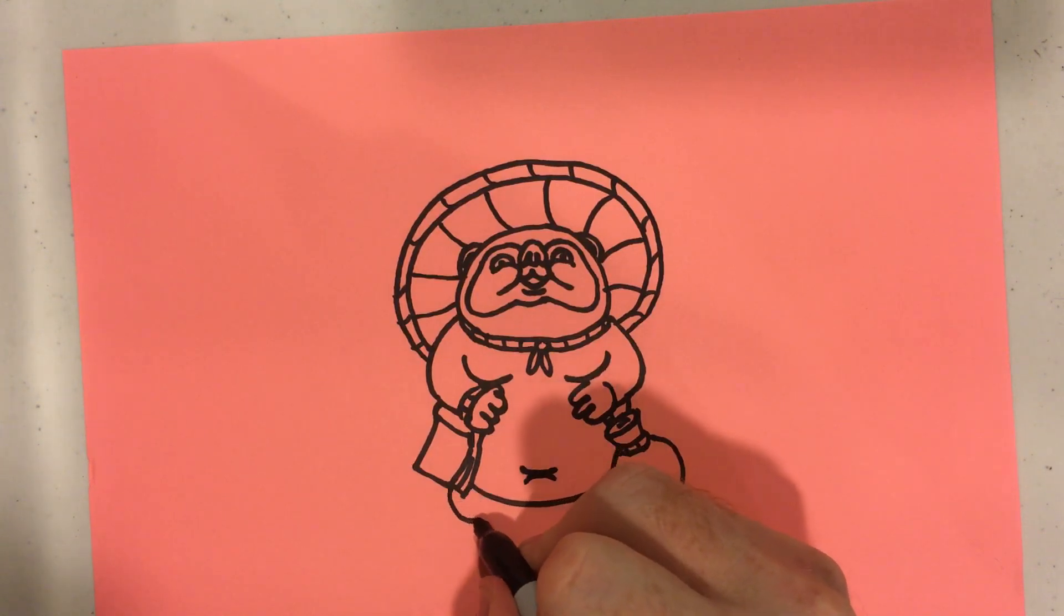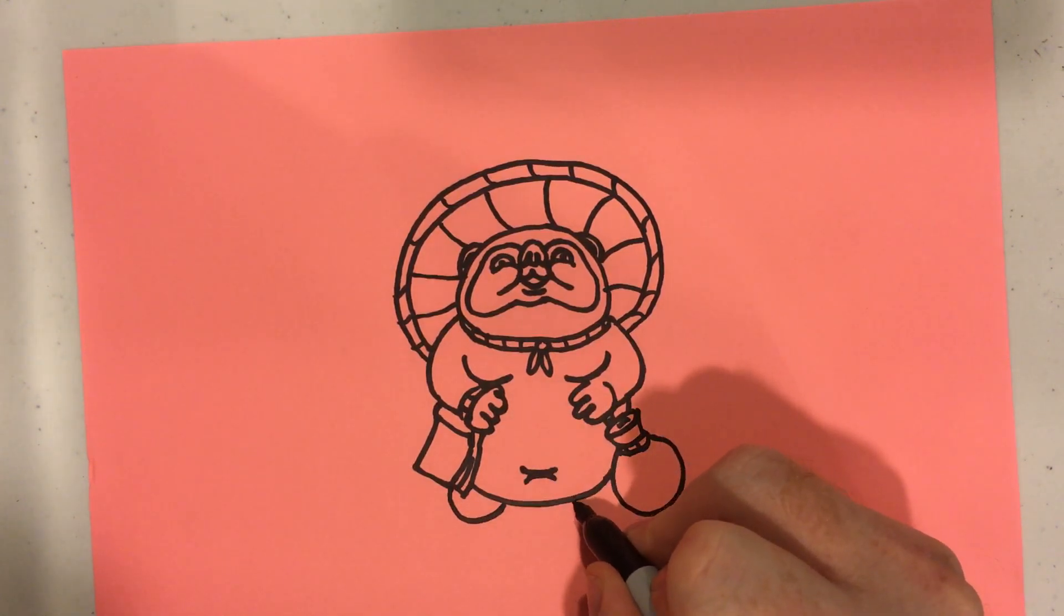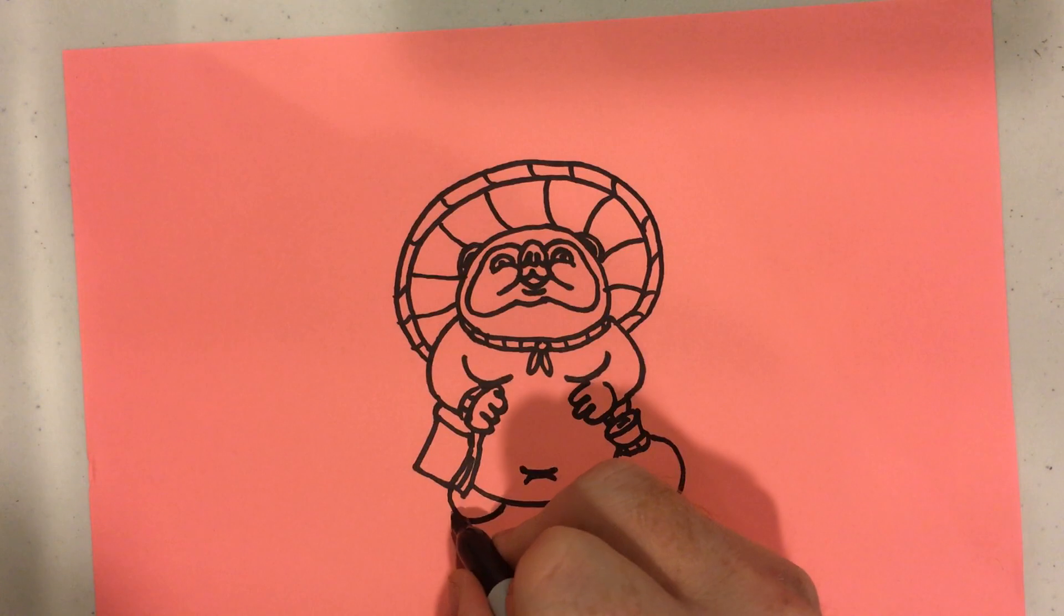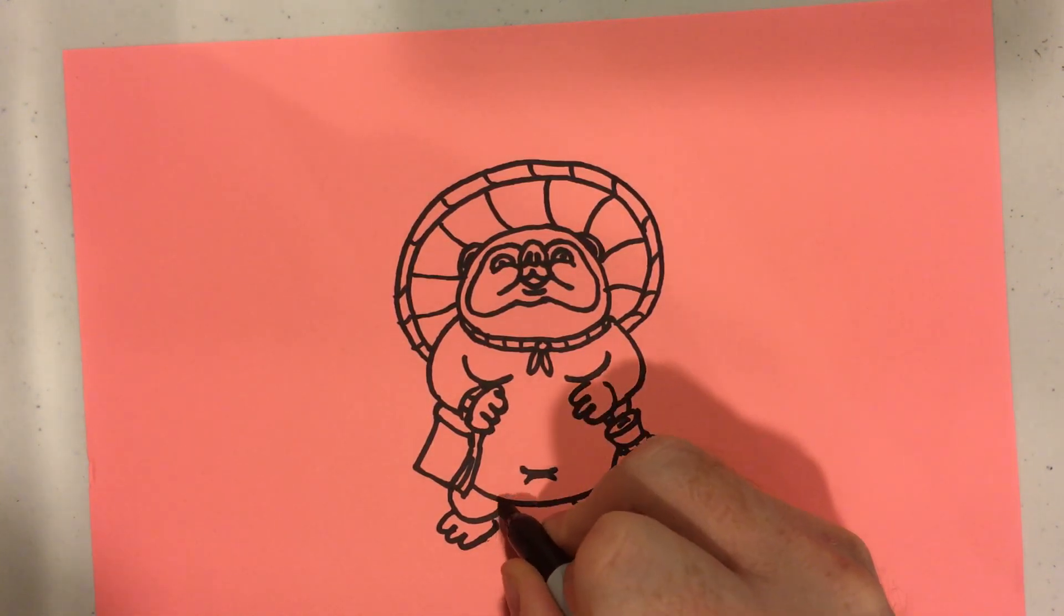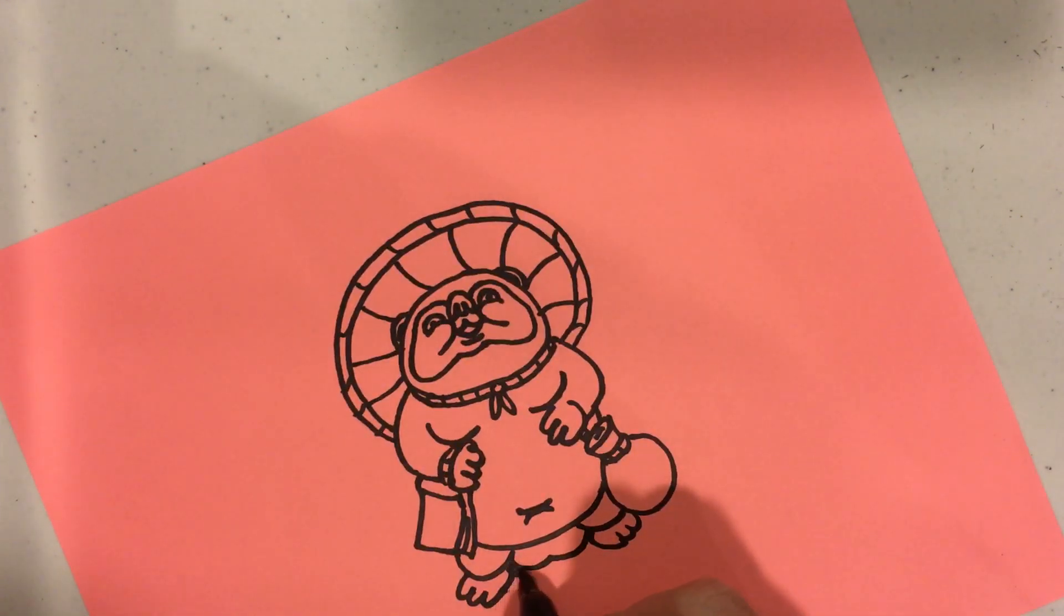And he's got his little knees and his little feet. Got a little bit of shadow underneath.